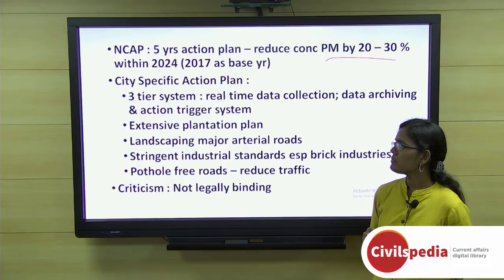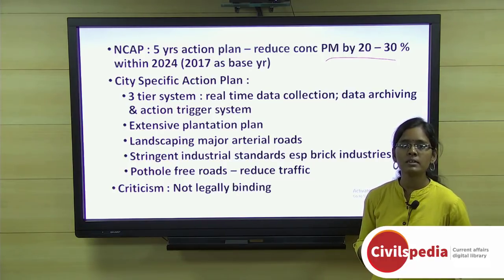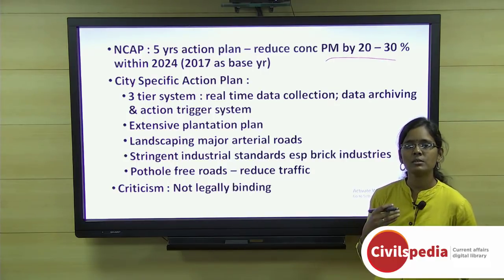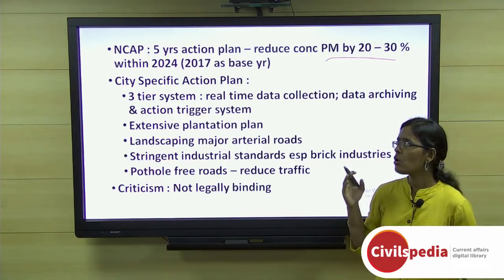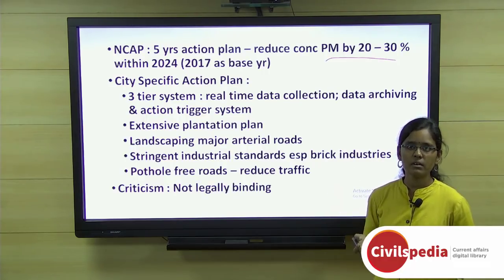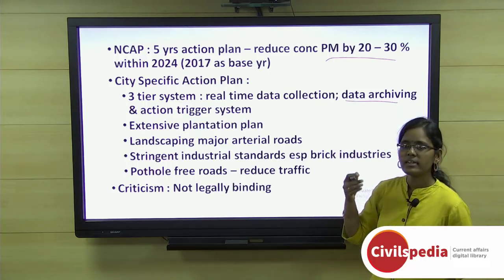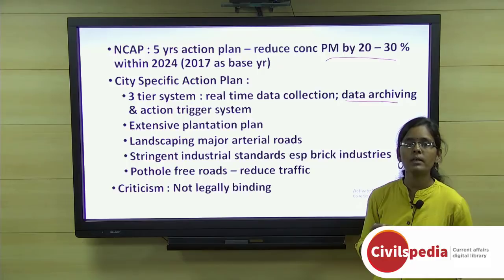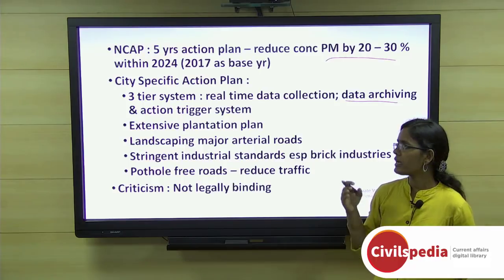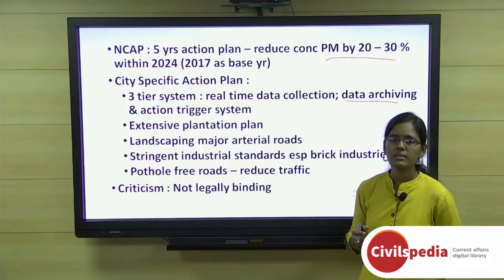The NCAP targets a 20 to 30 percent reduction in particulate matter by 2024, taking 2017 as the base year. The city-specific action plan includes developing a three-tier system: the first tier involves real-time data collection from all cities; the second tier involves data archiving; and the third involves data processing to create a decision support system for prioritizing action triggers across cities.